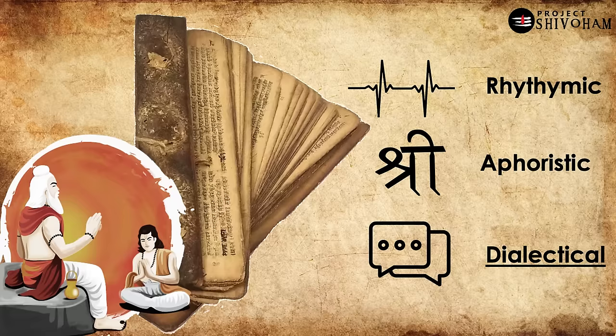And coming to the third one: being dialectical, and this is the most beautiful of the three. Because the first and second require a bit of scholarship in Sanskrit, but the third one — being dialectical — is in a simple storytelling format, where characters exchange ideas or indulge in a conversation, a discourse. Stories are a very powerful means of communication in the history of mankind, and that exactly is what is incorporated as a third standard in the Bharatiya knowledge systems.